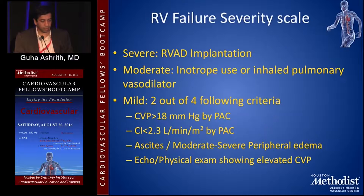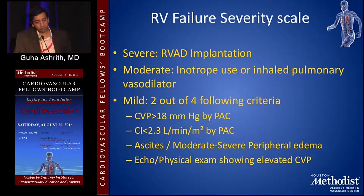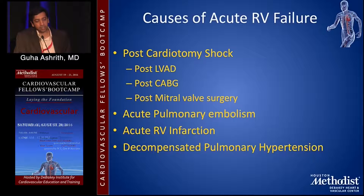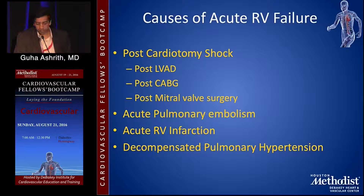Severe RV failure refers to patients requiring RVAD implantation; moderate RV dysfunction requires inotrope support; and mild RV failure describes patients meeting two out of four criteria. When looking at causes of acute RV failure, the most common are post-cardiotomy shock, post-LVAD, post-bypass, post-mitral valve surgery, acute pulmonary embolism, acute RV infarction, and decompensated pulmonary hypertension.